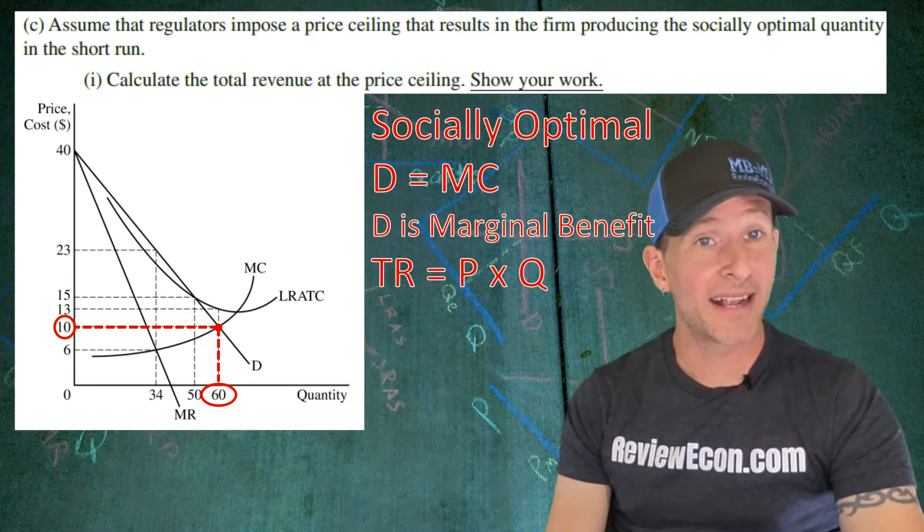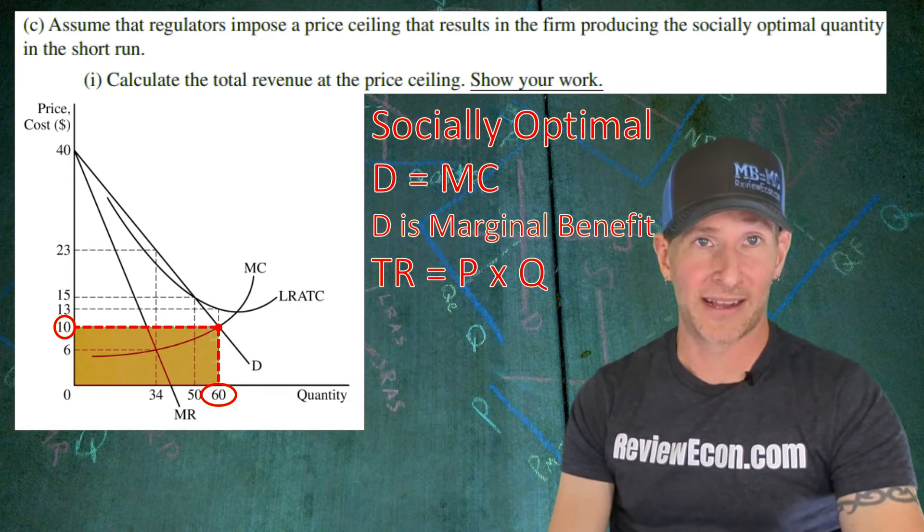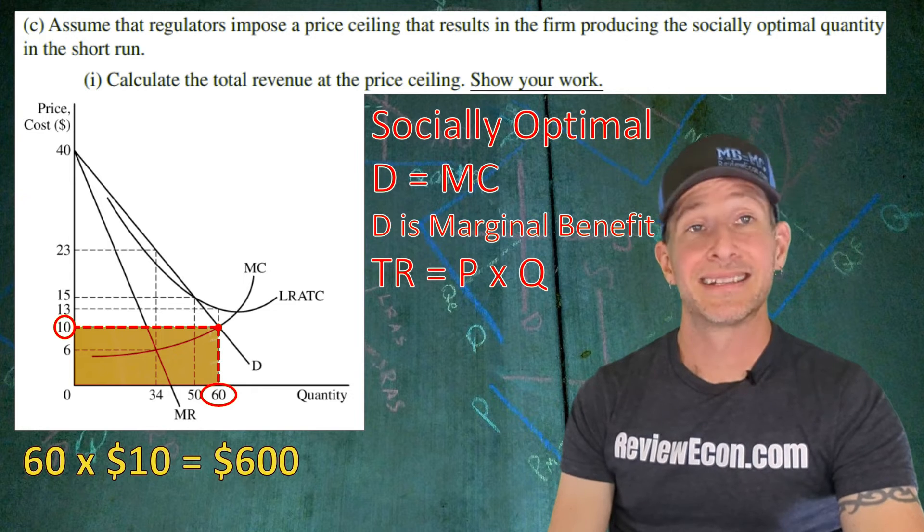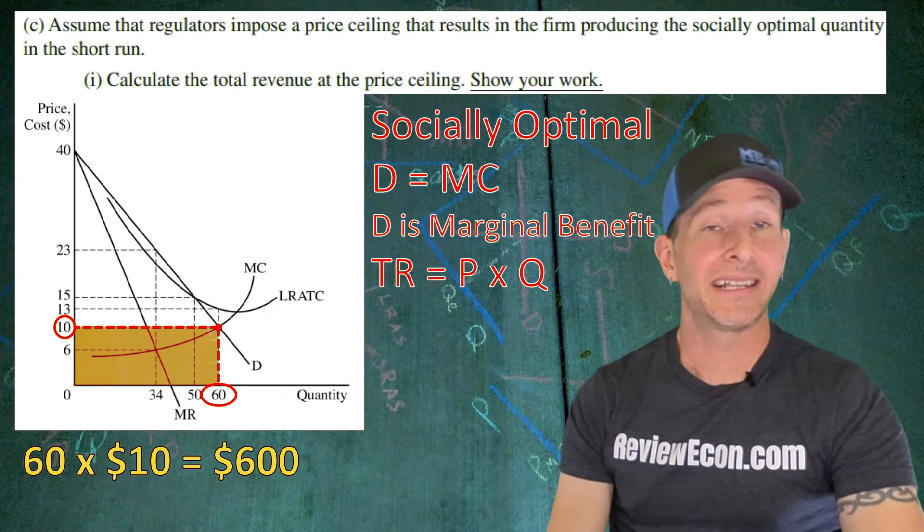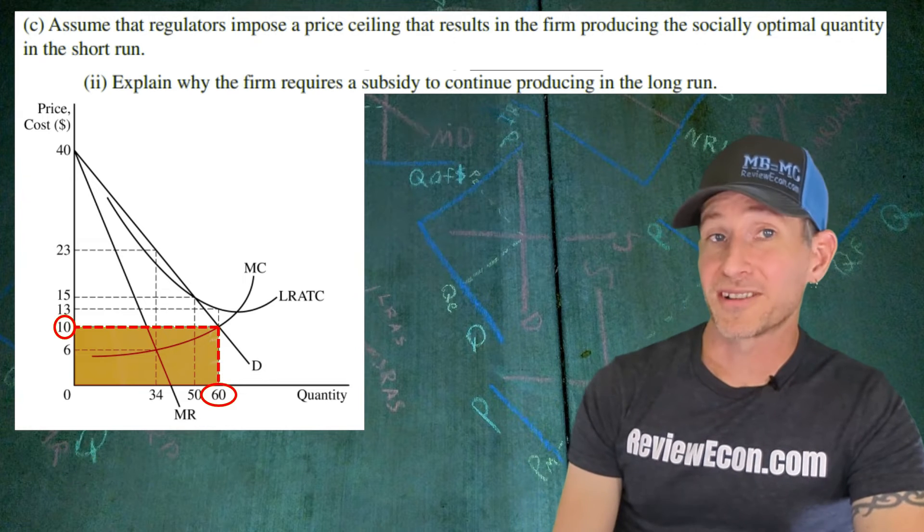Remember, total revenue is price times quantity. You're essentially calculating the area of that rectangle right there. Plug in the numbers and do the math. 60 units times $10 equals $600. And if you calculated it correctly, you got your point.